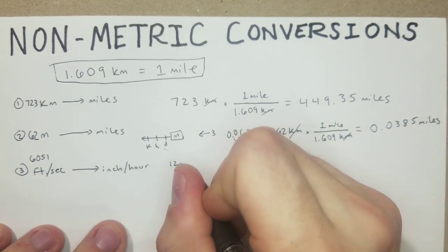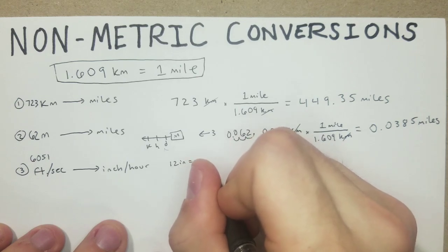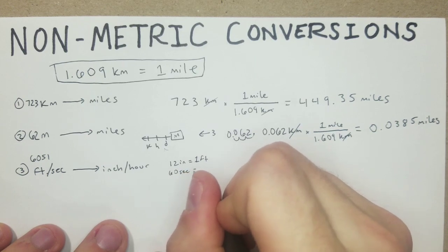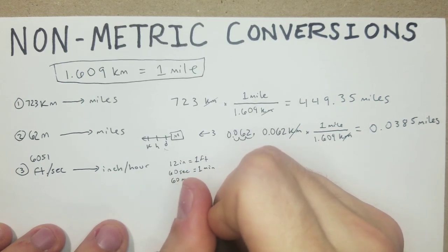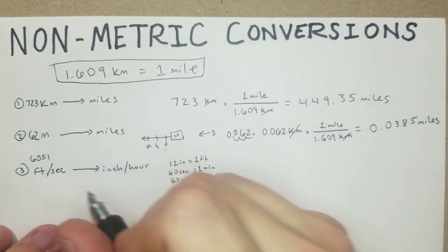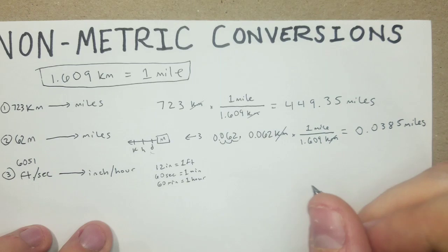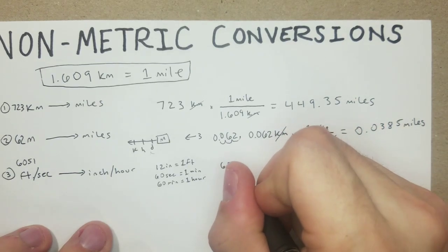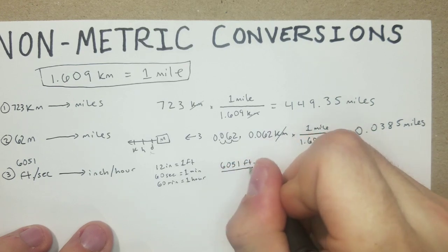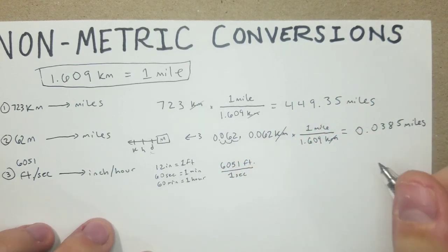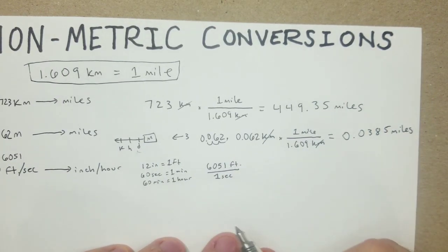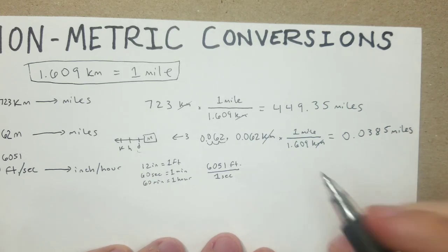We know that there are 12 inches per one foot, and we know that there are 60 seconds in one minute, 60 minutes in one hour. So we're going to use these to figure this out. We can start off with the 6051 feet per one second, and we're just going to go through a series of these fractions in order to cancel out what we have and end up with what we need to get.